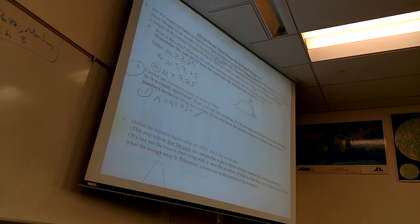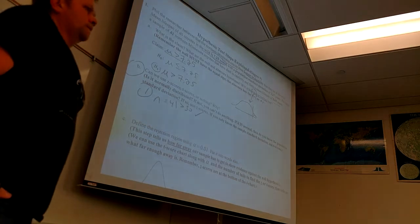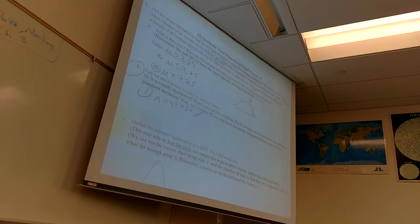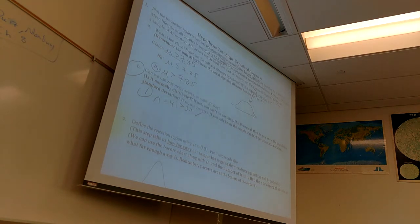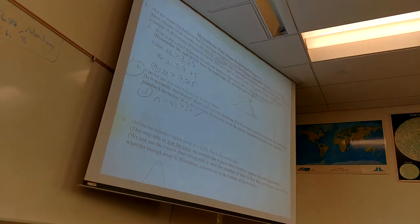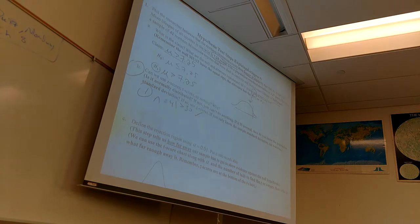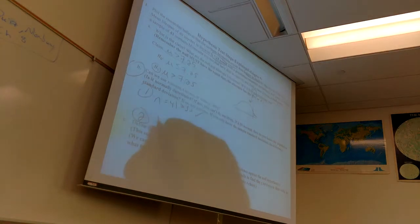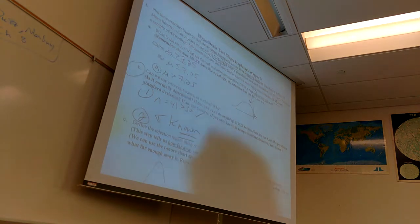The second thing: which formula can I use? The sigma goes with Z and the S goes with T. Which standard deviation do we know? Population — sigma. So I'm allowed to use Z-scores. I only have to use T if I only know the sample standard deviation. But we know sigma, so we're good.